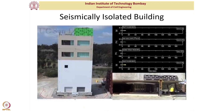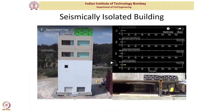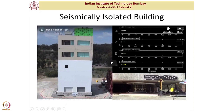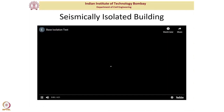A demonstration is shown using a full-scale building on a shake table facility at the University of California, San Diego — one of the largest shake table facilities in the world. The structure is built on a shake table platform that applies ground motion, and the building is base-isolated. The magnified view shows the isolators below the base mat.